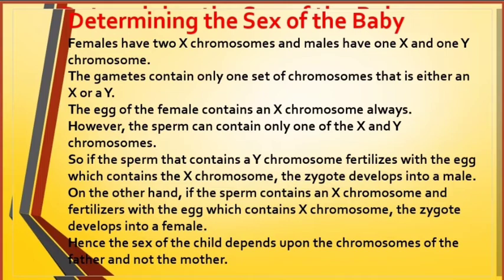The sperm can contain only one of the X and Y chromosomes. If the sperm that contains a Y chromosome fertilizes with the egg which contains the X chromosome, the zygote develops into a male. On the other hand, if the sperm contains an X chromosome and fertilizes with the egg which contains an X chromosome, the zygote develops into a female. Hence, the sex of the child depends upon the chromosomes of the father and not the mother.